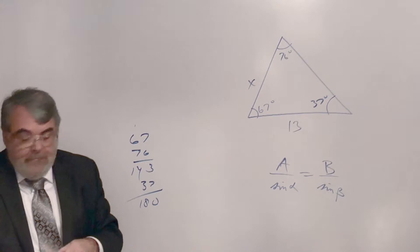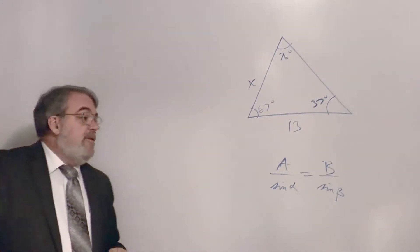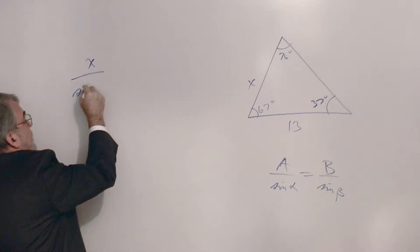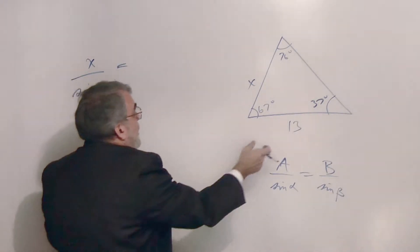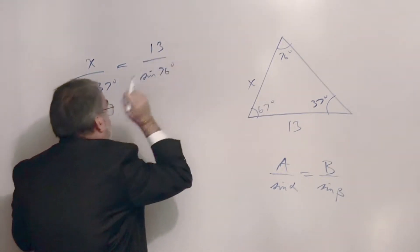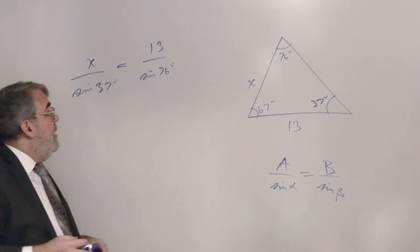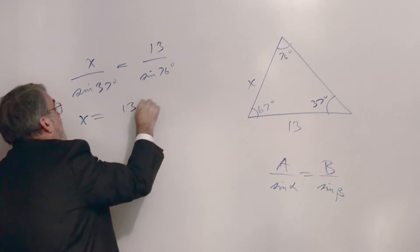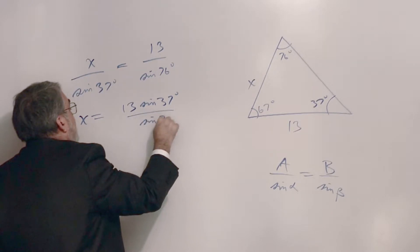Now I can use the Law of Sines because x is opposite a known angle. I put x over sine of 37 degrees, and that equals 13 over sine of 76 degrees — length on top, sines in the denominator. So x equals 13 sine 37 degrees over sine 76 degrees.